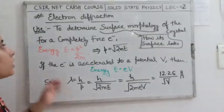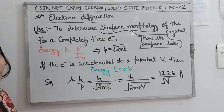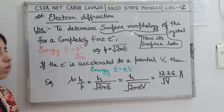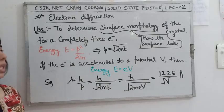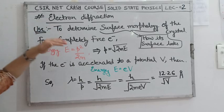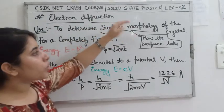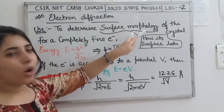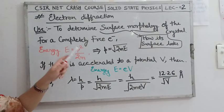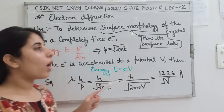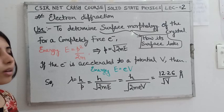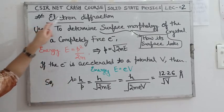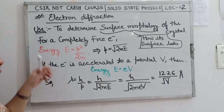The next topic is electron diffraction. Diffraction is the bending of a wave at the edge of an obstacle. We study electron diffraction to determine the surface morphology of a crystal — that is, how the crystal surface looks. To derive the electron wavelength formula, we need to remember the intermediate steps.